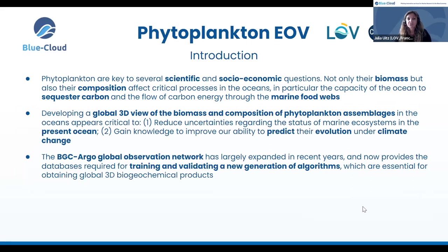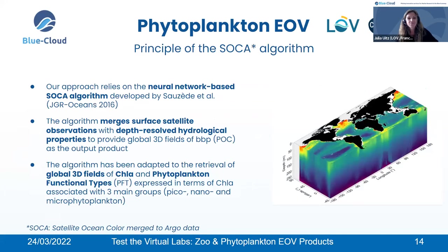Developing capability for obtaining a global 3D view of the biomass and composition of phytoplankton communities is critical — particularly to reduce uncertainties regarding the status of marine ecosystems in the present ocean, and to gain knowledge and improve our ability to predict their evolution under changing climate. In recent years, the BGC — Biogeochemical Argo Global Observation Network — has largely expanded and now provides the in-situ data required to train and validate a new generation of machine learning algorithms that represent a powerful tool to develop such a global 3D view of biogeochemistry in the oceans.